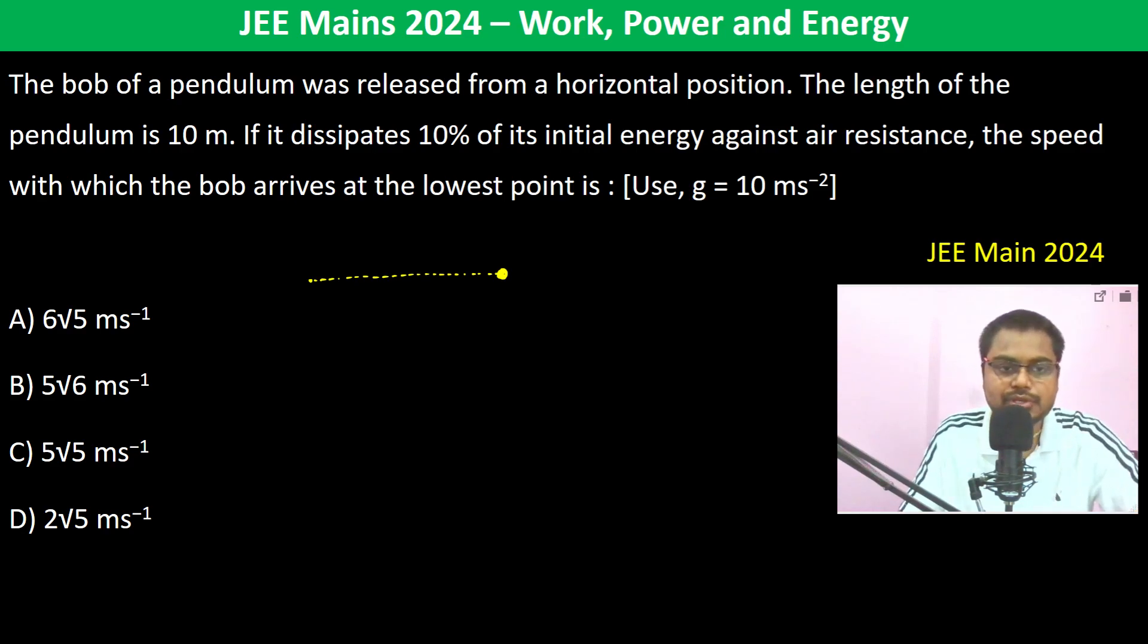The bob of a pendulum is released from a horizontal position. The length of the pendulum is 10 meters. If it dissipates 10% of its initial energy against air resistance, the speed with which the bob arrives at the lowest point...